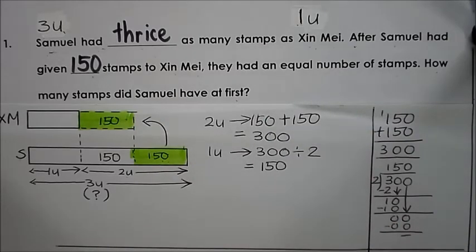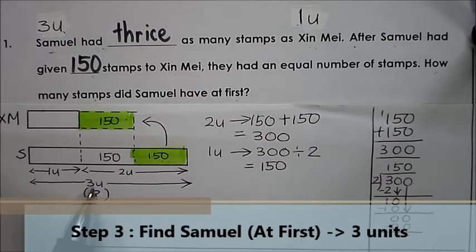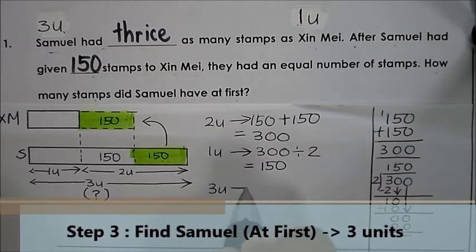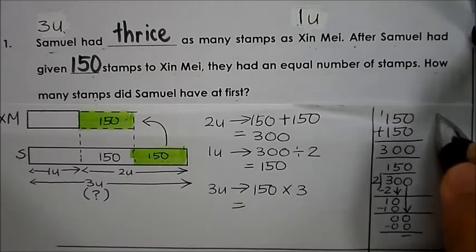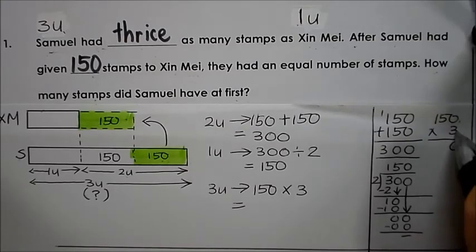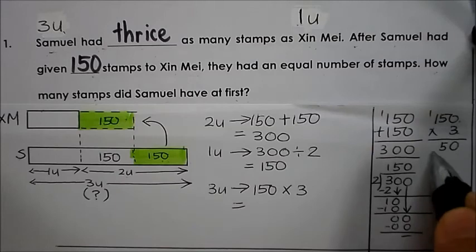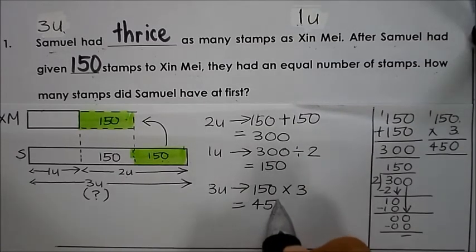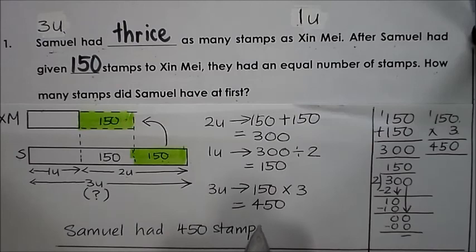So one unit is 150, but the question asks how many stamps did Samuel have at first. We need to find the value of 3 units, so 3 units is the same as 150 times 3. Let's do the working: 150 times 3 — 0 times 3 is 0, 5 times 3 is 15, carry the 1, 1 times 3 is 3 plus 1 is 4 — so 450. Therefore, Samuel had 450 stamps at first.